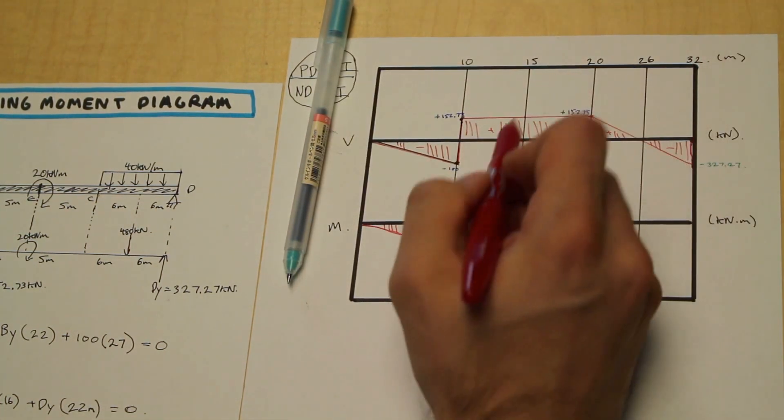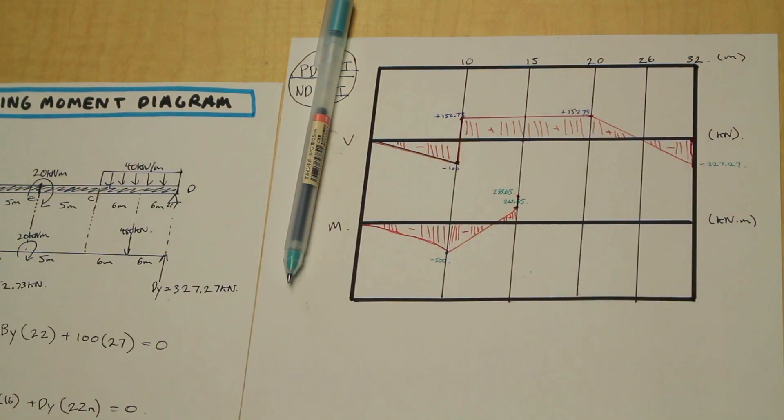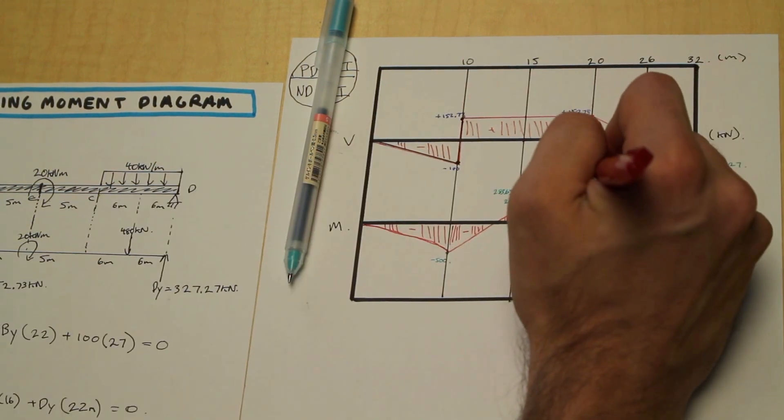And then we continue along exactly the way that we were solving this one. So we have another rectangle of 152.73 times 5 meters. That's going to be 763.65. And we're going to add that to 283.65. And that's going to give us...